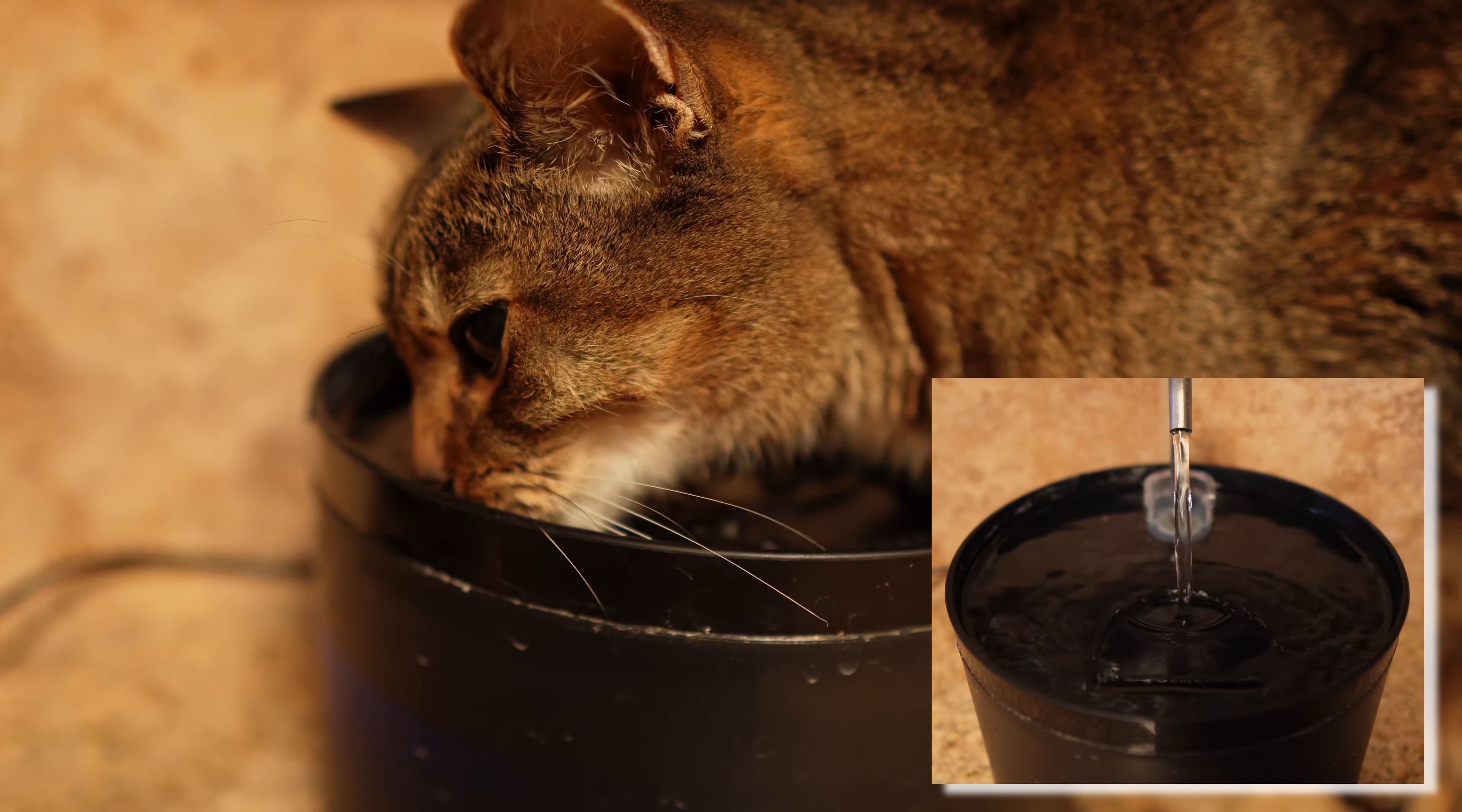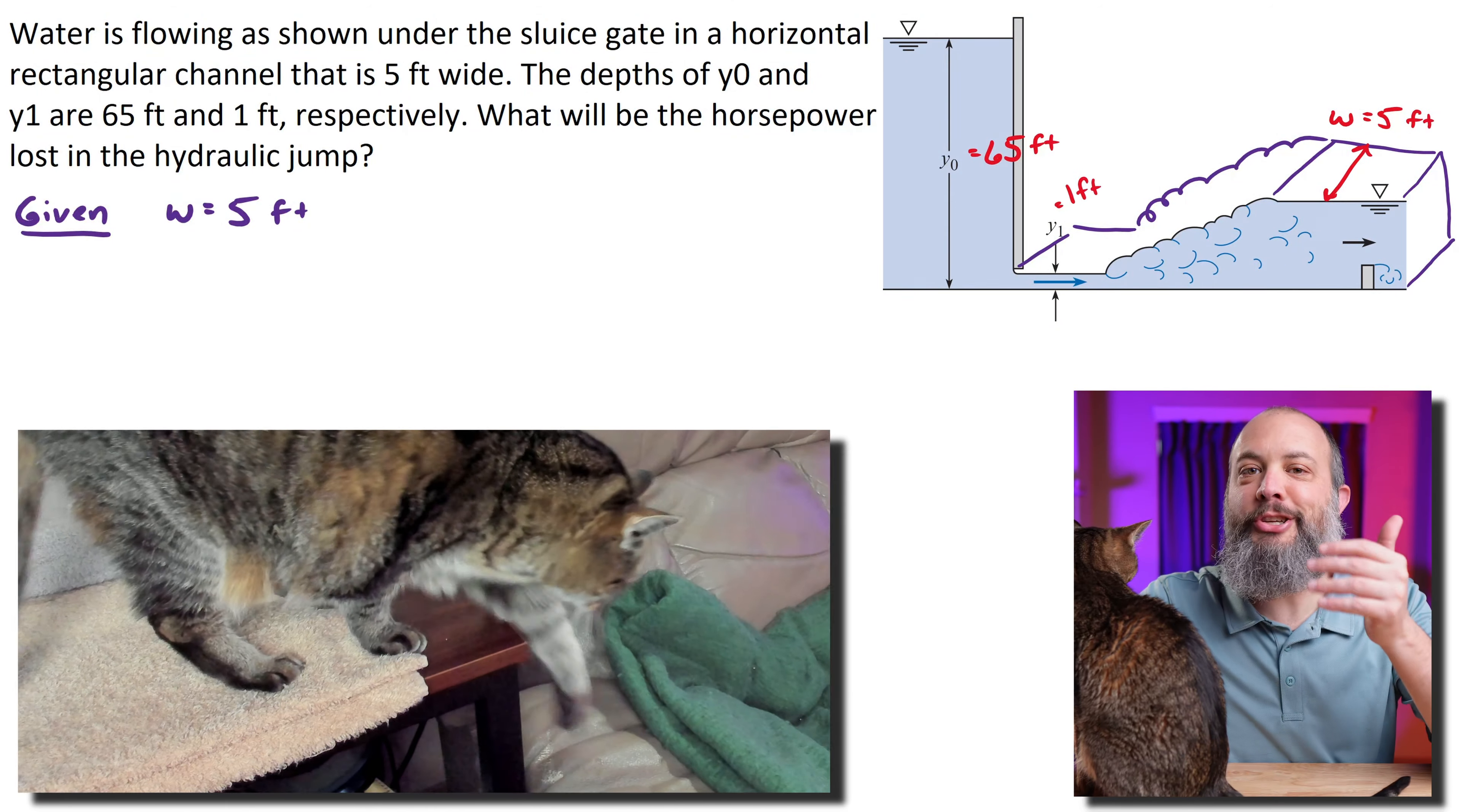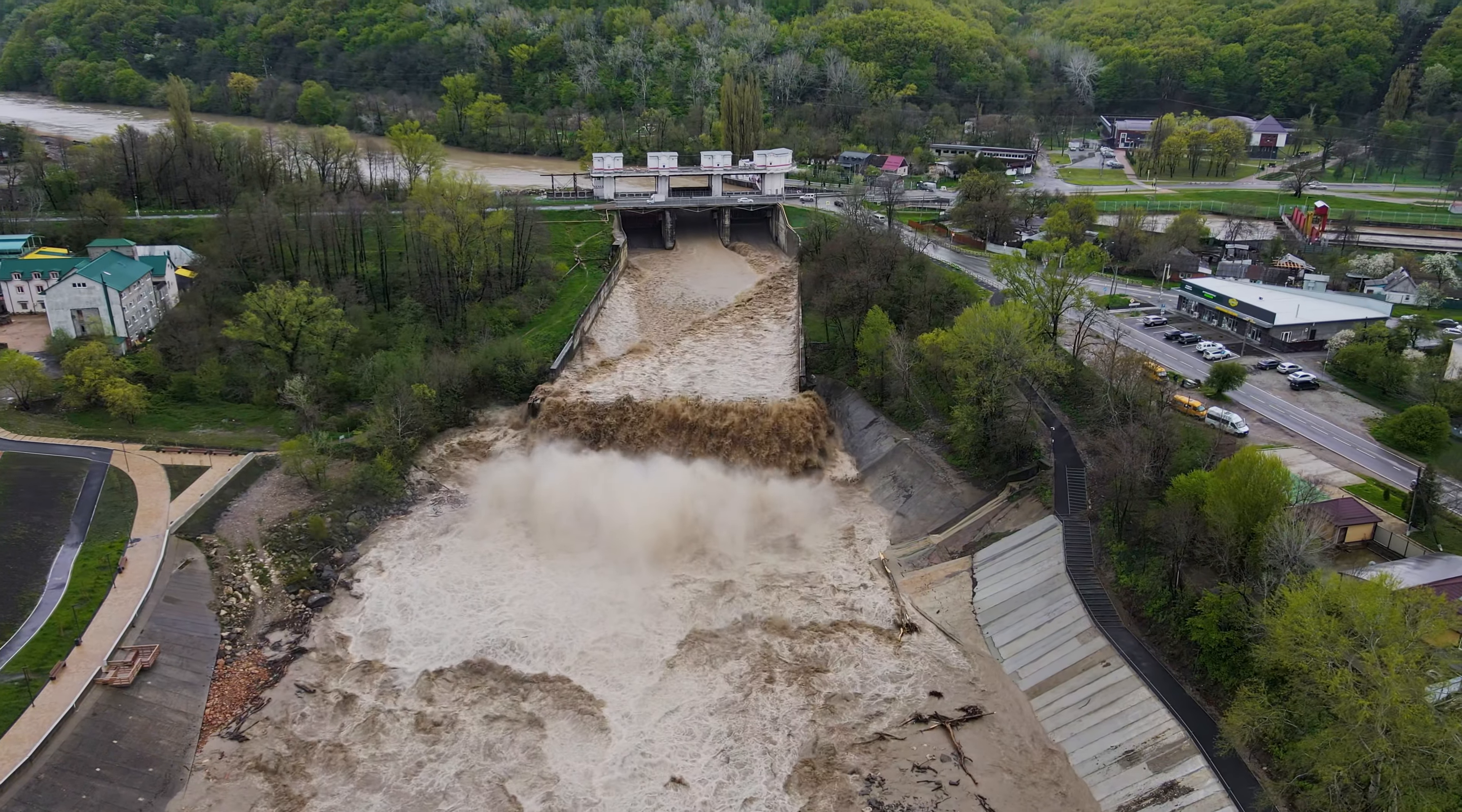Hydraulic jump is where you shift from a very thin film of fast moving liquid to a much thicker slower moving liquid. For civil engineers, the main reason you should be interested in hydraulic jump is because of power loss—a hydraulic jump is a great way to remove unwanted energy from flowing liquid.